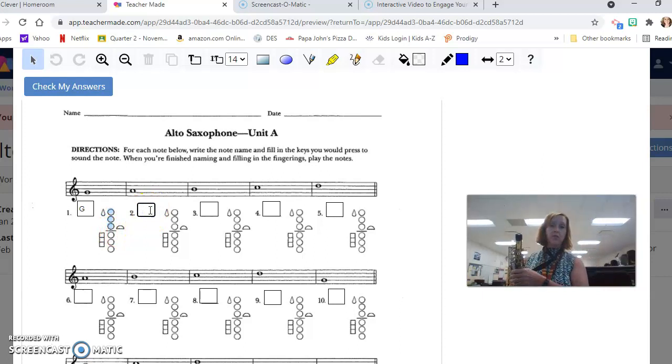Next, for number two, when we go up in the alphabet and we hit G, we start over again on A. Plus, the second space in the treble clef is an A. And with A, it's just like G, but we lift one finger, so we just press down one and two. So I'm going to color those in.